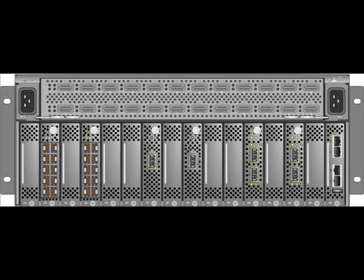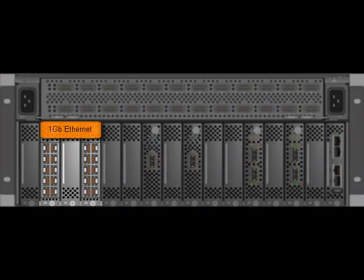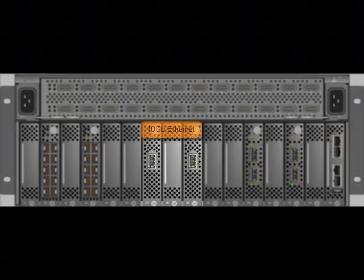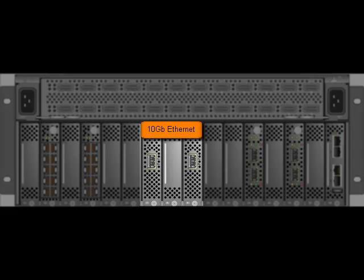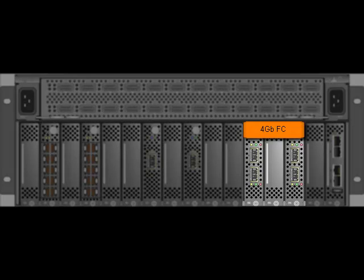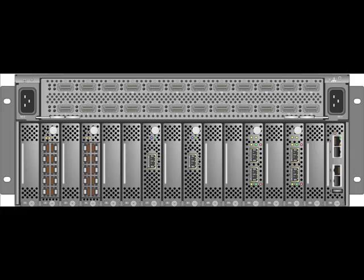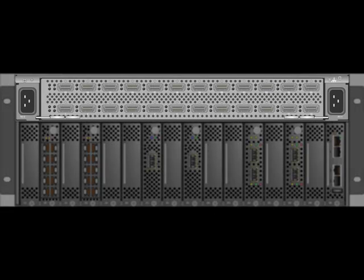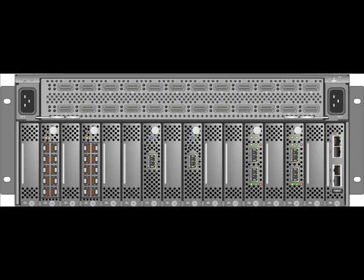Now we can look at the other connections that make up the data path to and from the SEGO IO Director. All these connections use standard cables. We see two IO modules with 1 Gigabit Ethernet ports, two IO modules with 10 Gigabit Ethernet ports, and two IO modules with 4 Gigabit Fiber Channel ports. The only connections left to make are the two power cables and the InfiniBand cables connecting the servers or expansion switches to the SEGO IO Director. That completes this tour of the SEGO IO Director components and connections.